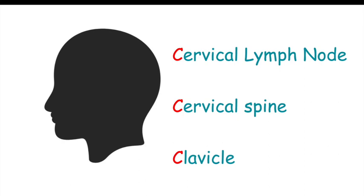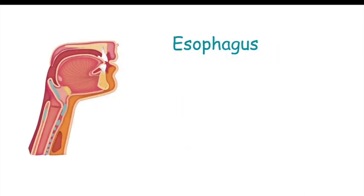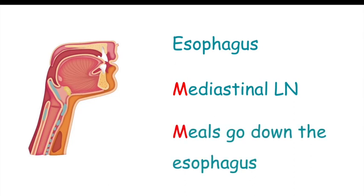The exception to this is the esophagus, which drains into the mediastinal lymph node. We can remember this by saying meals go down the esophagus — the M for mediastinal and the M for meals. Also, the trachea is very close by to the esophagus, so the esophagus and the trachea both drain into the mediastinal lymph node.